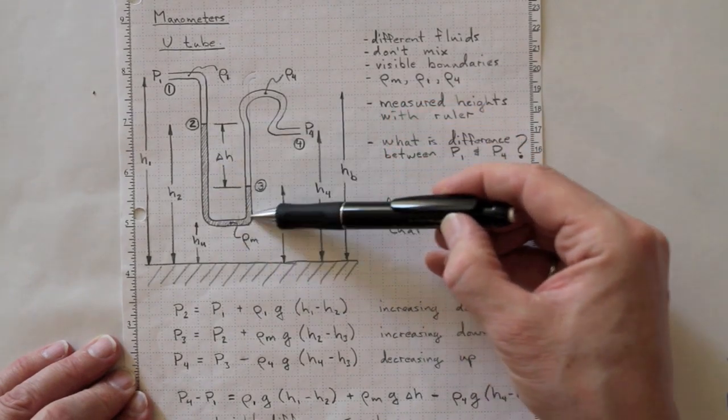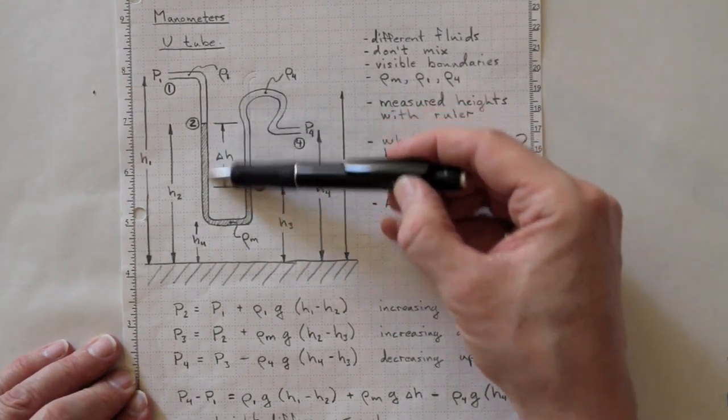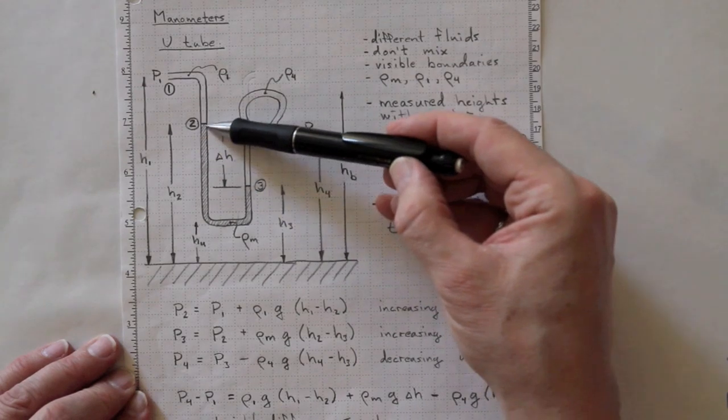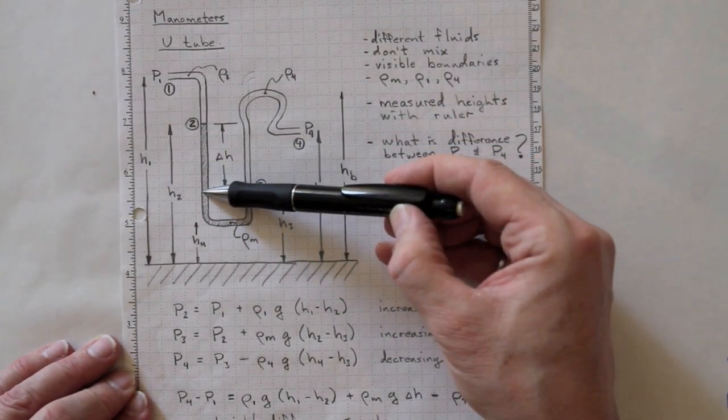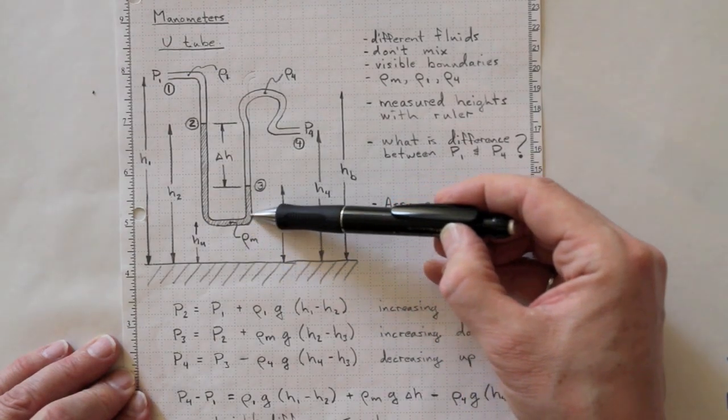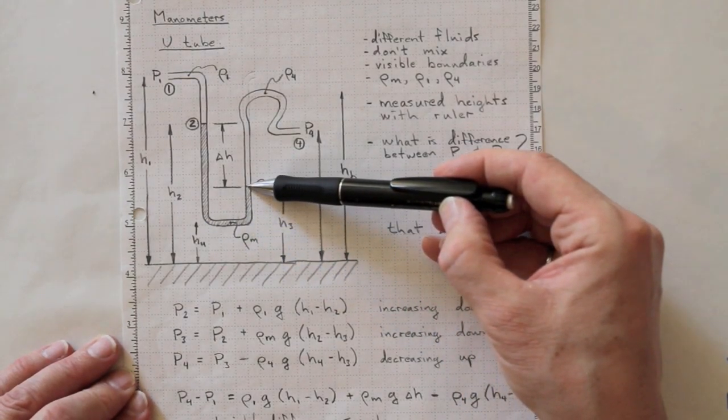So again, the pressure is increasing as we go down in elevation through the manometer fluid. And it doesn't matter this loop down at the bottom because the pressure increases down and then decreases going back up the same amount.